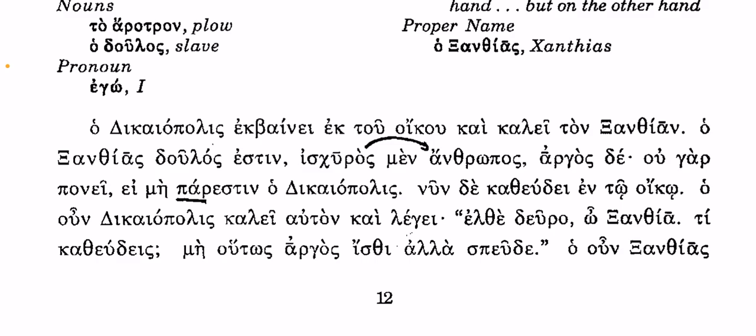'Nin de katheudei en to oikoi.' So 'nin' means 'now' — 'de' is another post-positive — 'and now he is sleeping in the house.' What kind of servant is this? Xanthias has a pretty good gig going on — he gets to sleep in the house while his employer is outside working. 'Nin de katheudei en to oikoi' — and now he is sleeping in the house.